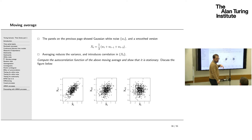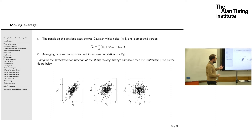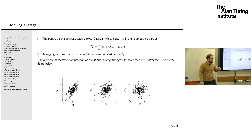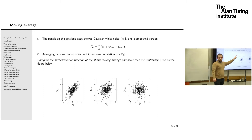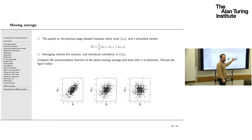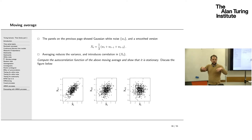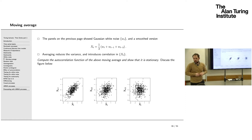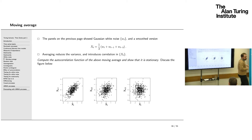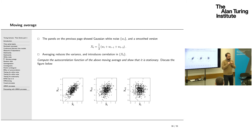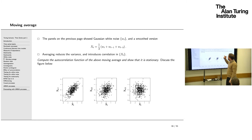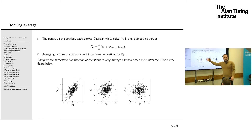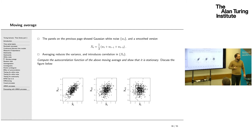Lag plots confirm the injected correlation: at lag 1 there is positive correlation, which dissipates at lag 2, and vanishes completely at lag 3 — there is no overlap in the white noise events to explain the correlation at lag 3. If we averaged the q most recent events, the correlation would cut off after lag q.